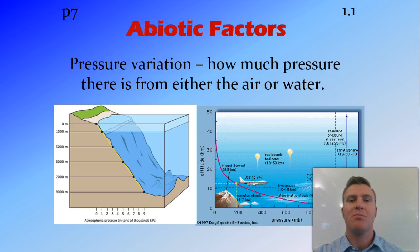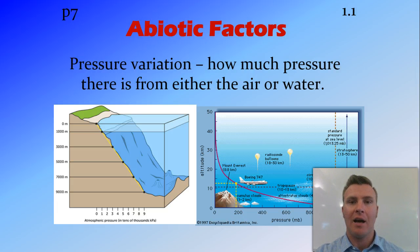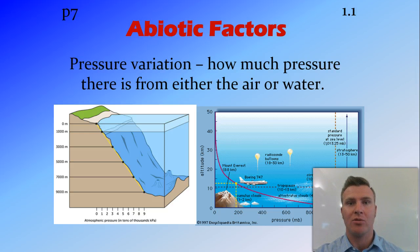Pressure variation is how much pressure there is from either air or water. In water, as you get deeper, the pressure increases — this is why diving deep in a pool causes pain in your ears. As you get higher in terrestrial environments, the pressure decreases. Deep sea animals adapted to high pressure would actually lose their structure and expand if pulled up. In a terrestrial environment, as pressure decreases with altitude, the amount of oxygen available in the air also decreases, making it harder for animals to breathe.